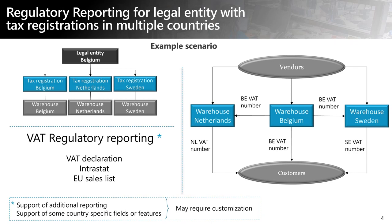We will demonstrate how to create VAT declarations, Intrastat and EU Sales List reporting from that Belgian legal entity for purpose of filing taxes in Netherlands and Sweden. Support for this scenario requires the tax calculation service, which will be globally available in the upcoming fall release. On the community website, there is also a recording available for the tax calculation service provided by colleagues from the tax team earlier in September.